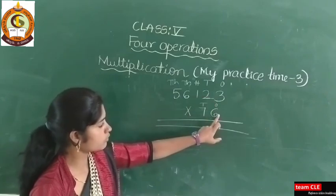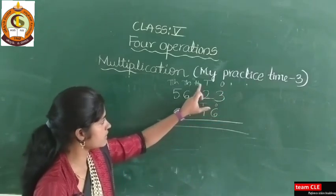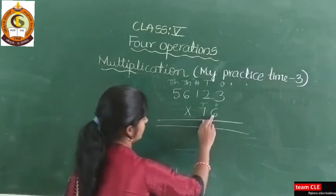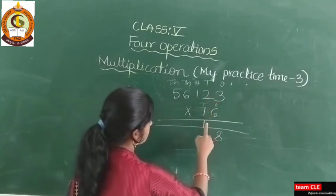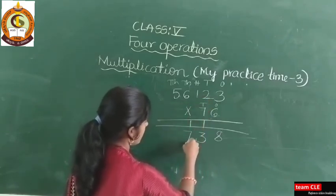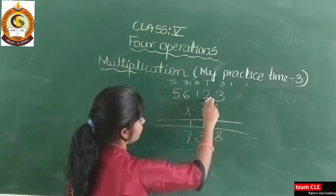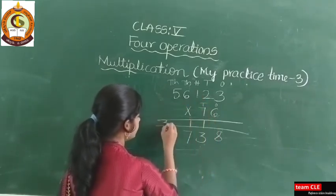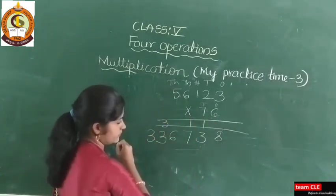Start multiplying from the ones place, not the ten thousands place. Six threes are 18 — carry 1, write 8. Six twos are 12, plus 1 is 13 — carry 1, write 3. Six ones are 6, plus 1 is 7. Six sixes are 36 — carry 3, write 6. Six fives are 30, plus 3 is 33 — carry 3, write 3.